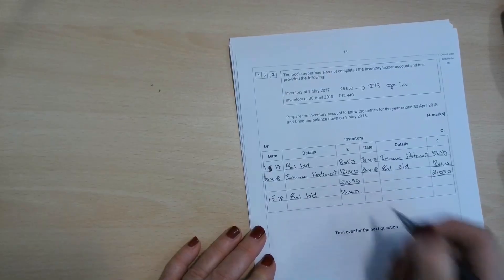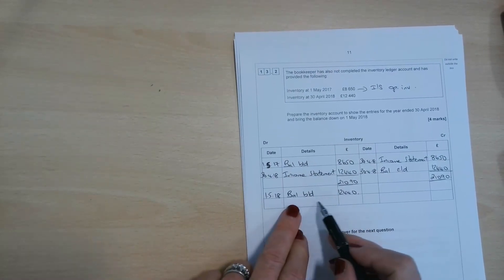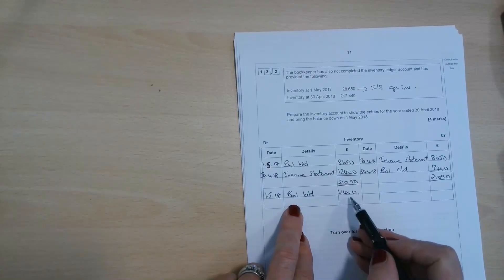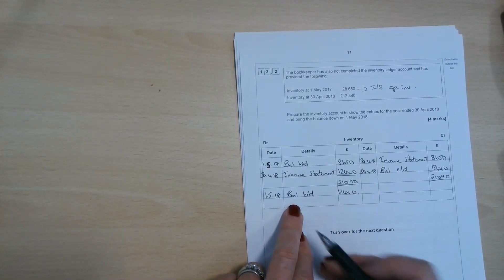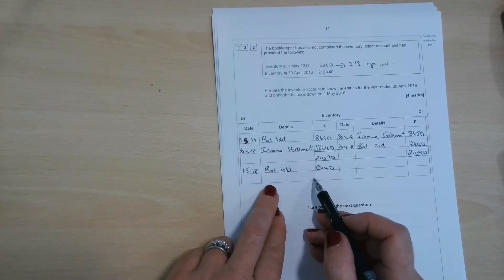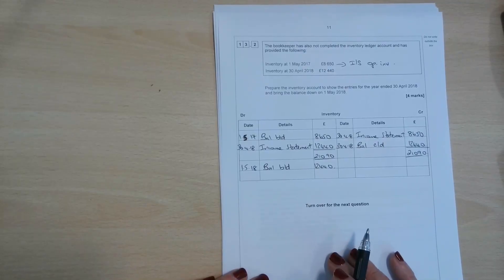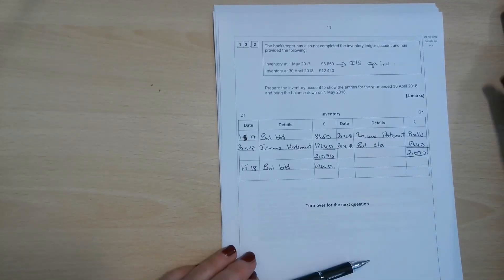That's going to be your opening inventory next year. Make sure you bring the balance down, because that's where you get the mark. You won't get a mark for this one. Generally, you get a mark for the BALBD. Thanks very much for watching. Don't forget to like and subscribe if you've enjoyed the video.